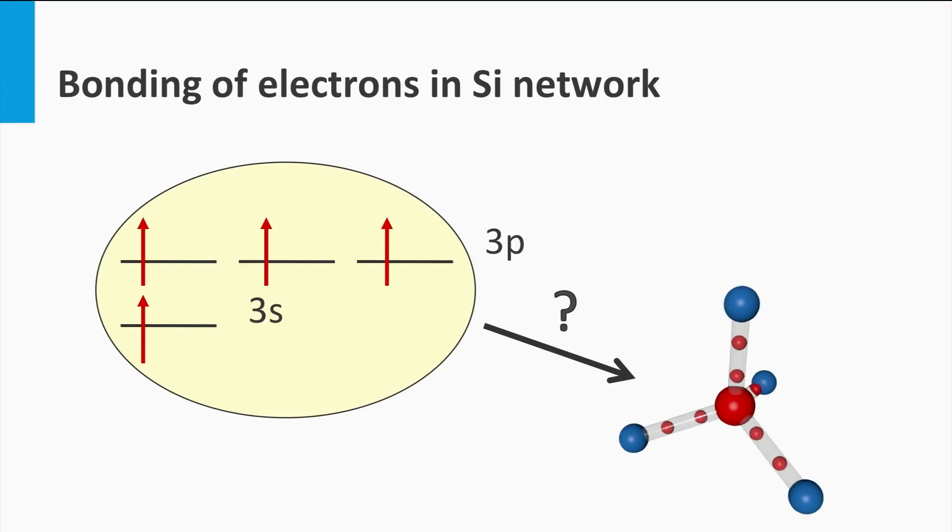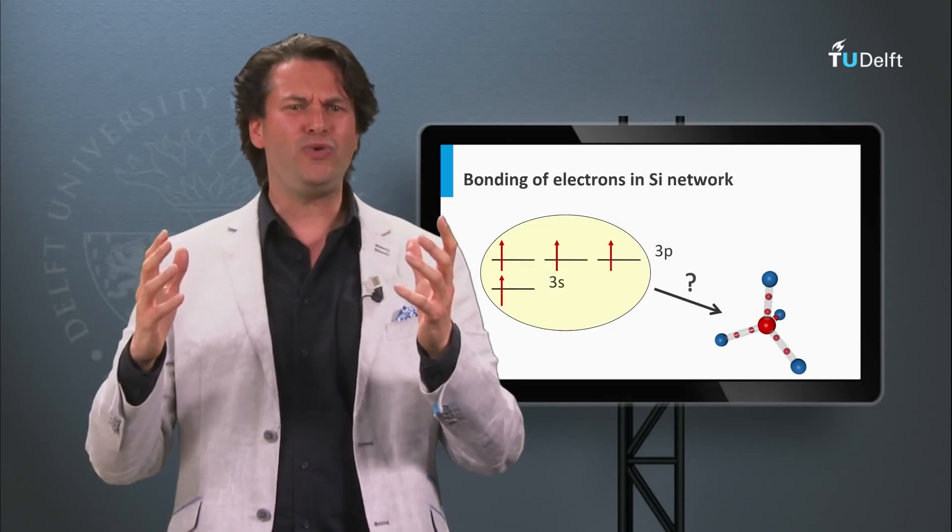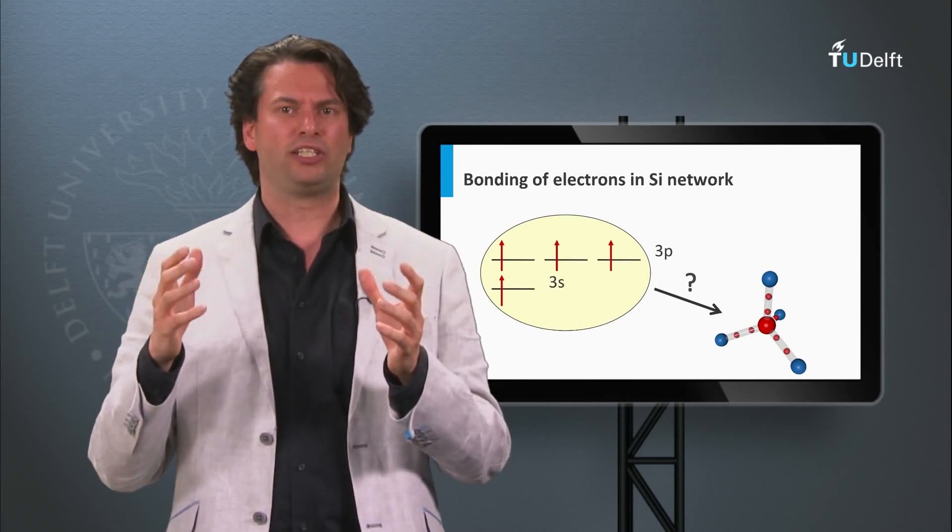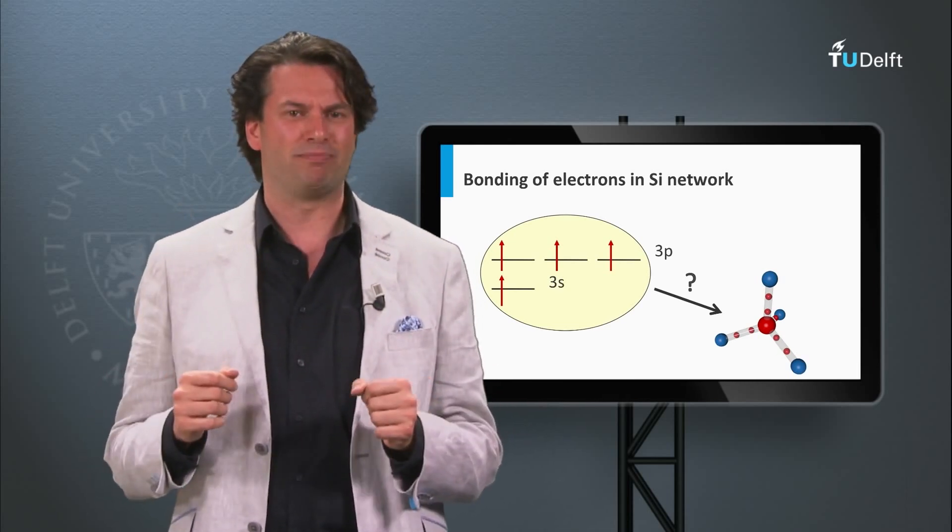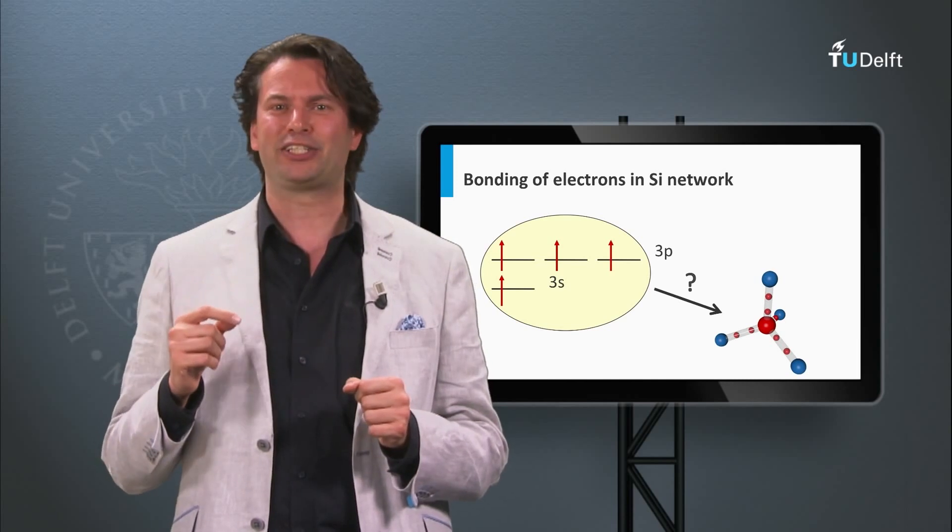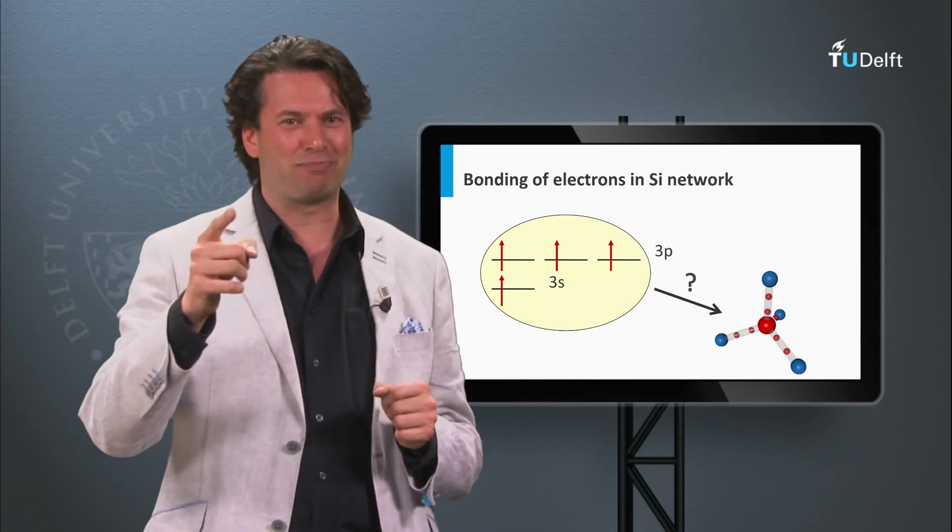Similar, like in the case of carbon, the 4 outer electrons of the silicon atom will play an important role in making bonds with other atoms in a molecule or in a solid. How do these molecular bonds determine the bandgap of silicon? I will give the answer to that question in the next block.